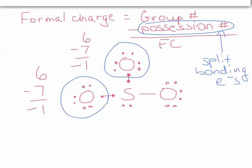I bet you can guess what the next oxygen is. I will draw a circle, splitting the bond again. It is in group six on the periodic table. There are seven in the circle, and it has a minus one formal charge.